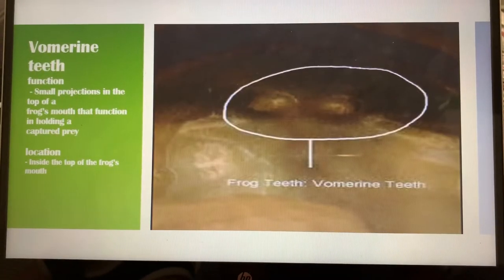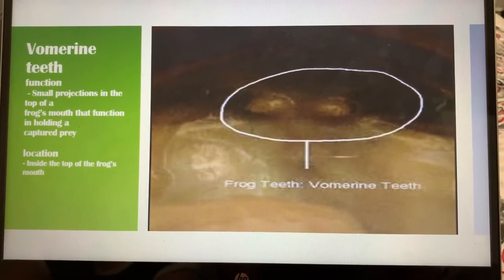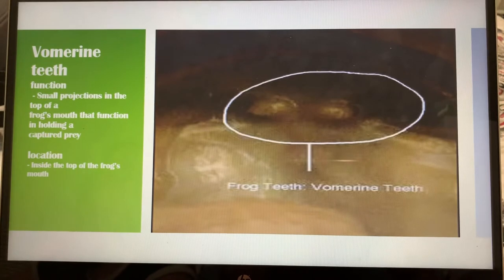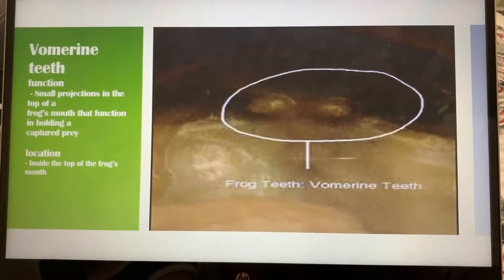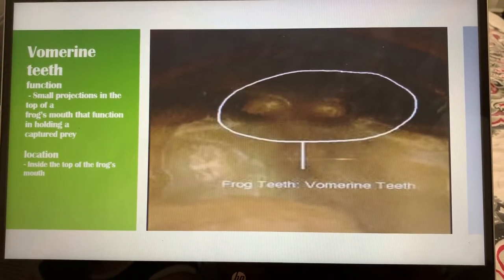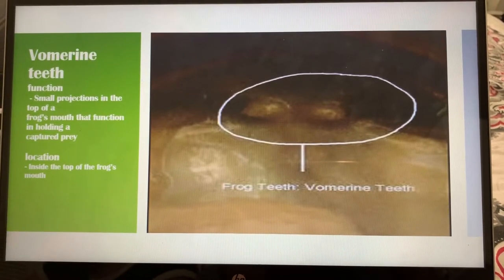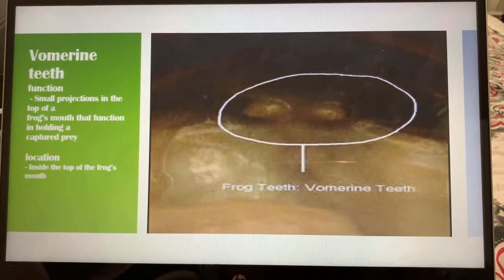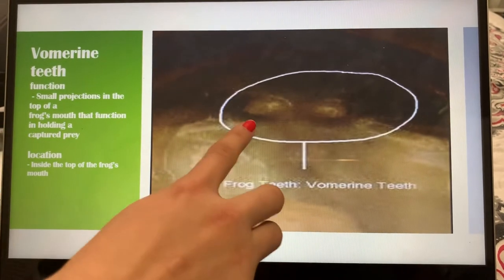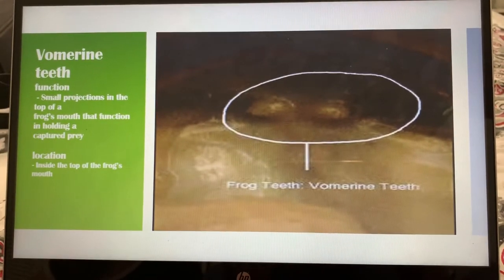Next we have the vomerine teeth. The vomerine teeth are small projections in the top of the frog's mouth that function in holding captured prey. The location is inside the top of the frog's mouth. Those two dots are the vomerine teeth.